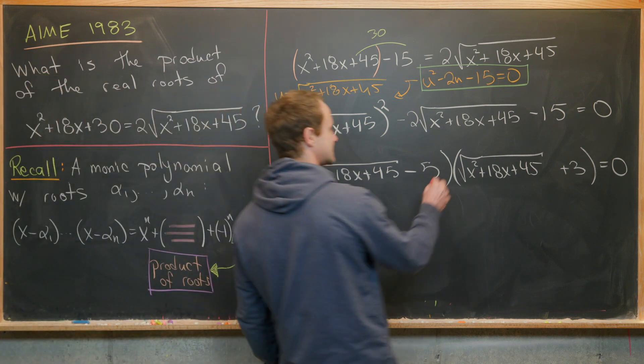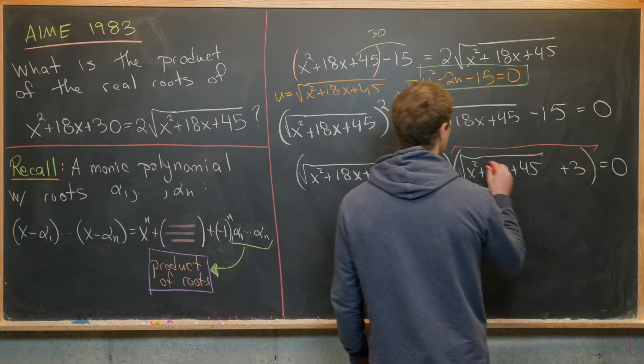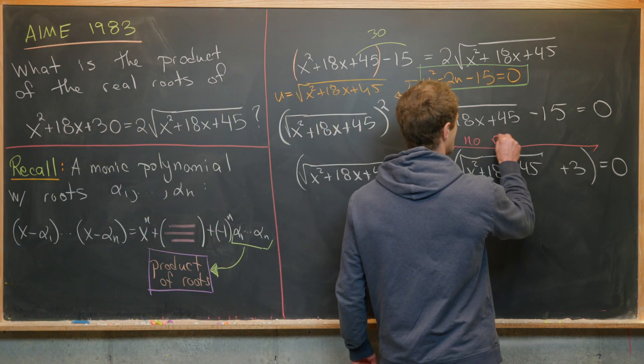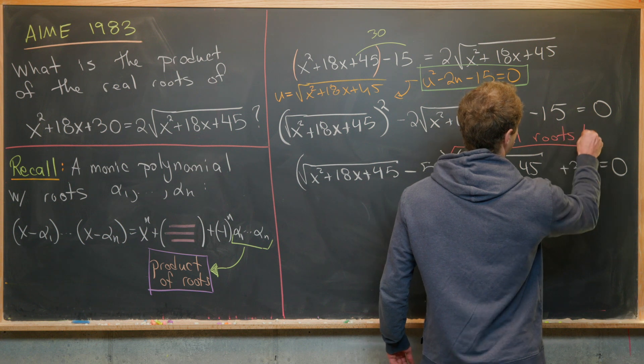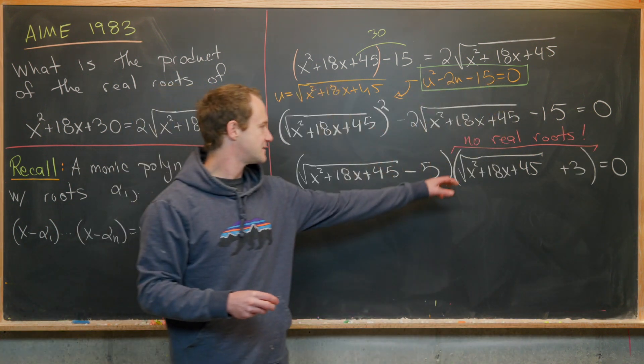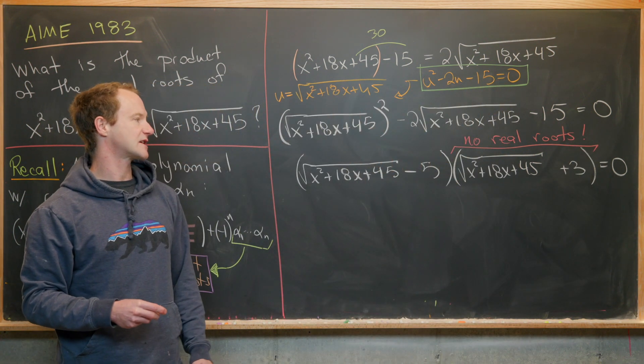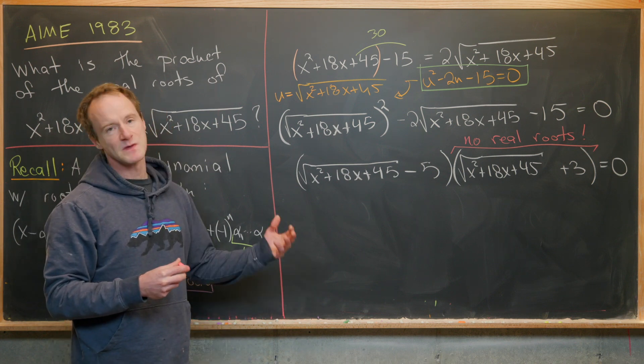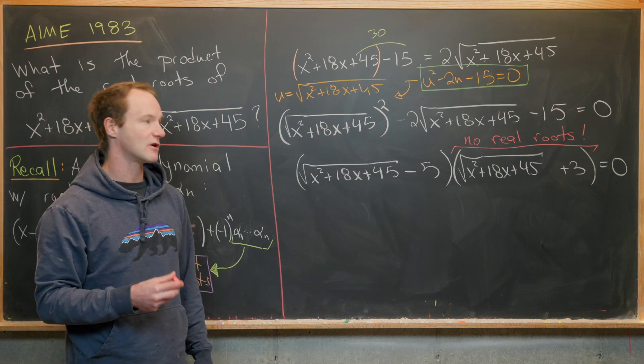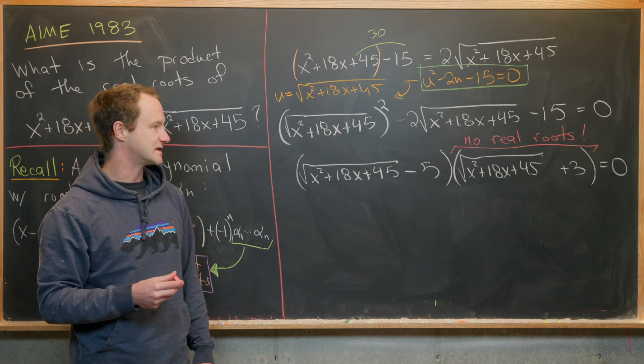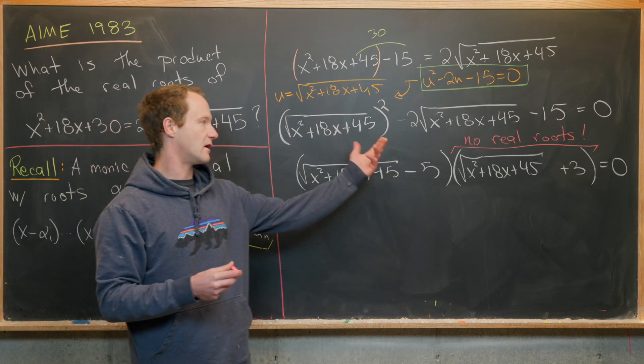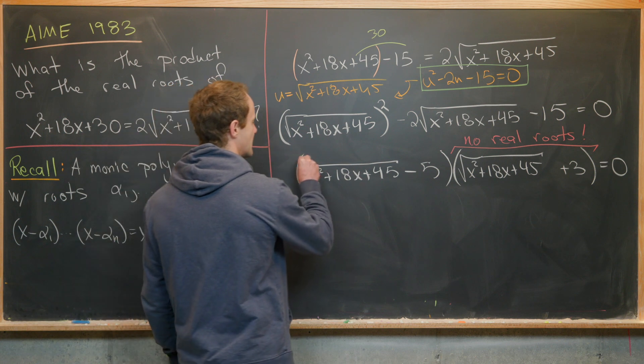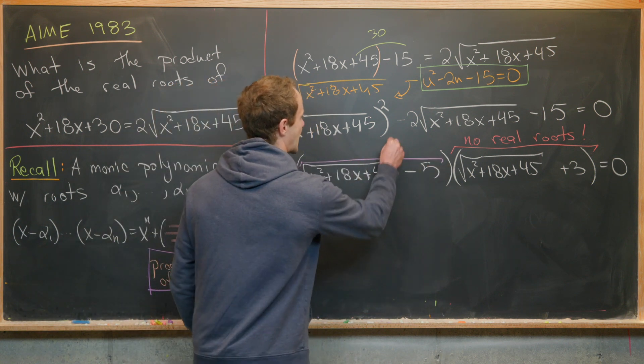Notice that this second factor does not contribute to any of the real roots. That's because √(x² + 18x + 45) + 3 is always positive. But if it's always positive, then it's never equal to zero. So that means all of our real roots come from setting the first factor equal to zero.